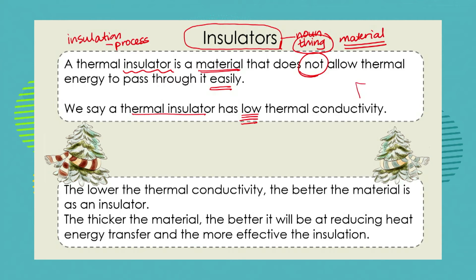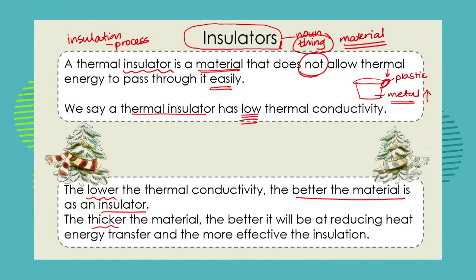So let's think of our pot again. We've got the metal pot and we've got a plastic handle. We would say that the metal has high thermal conductivity, but the plastic has low thermal conductivity. The lower the thermal conductivity, the better the material is as an insulator. Also, the thicker the material, the better it will be at reducing heat energy transfers, and the more effective will be the insulation.